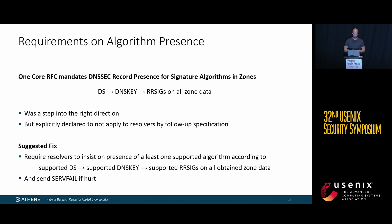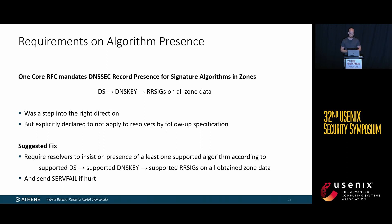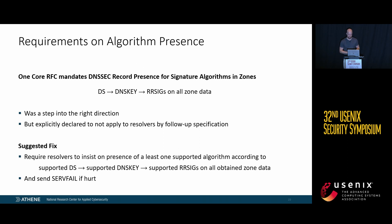There are some requirements on algorithm presence in the RFCs. One core RFC mandates that if an algorithm appears in a DS record, it must also appear in a DNSKEY, and if it appears in a DNSKEY, there must also be RRSIG records on all zone data for that algorithm. This was a step in the right direction, but a follow-up specification explicitly declared this not to apply to resolvers. As a fix, we suggest requiring resolvers to insist on presence of at least one supported algorithm: if there is a supported DS, the resolver must insist on a supported DNSKEY; and if there is a supported DNSKEY, it must insist on supported RRSIGs on all obtained zone data, and return SERVFAIL to the client if that criterion is not met.